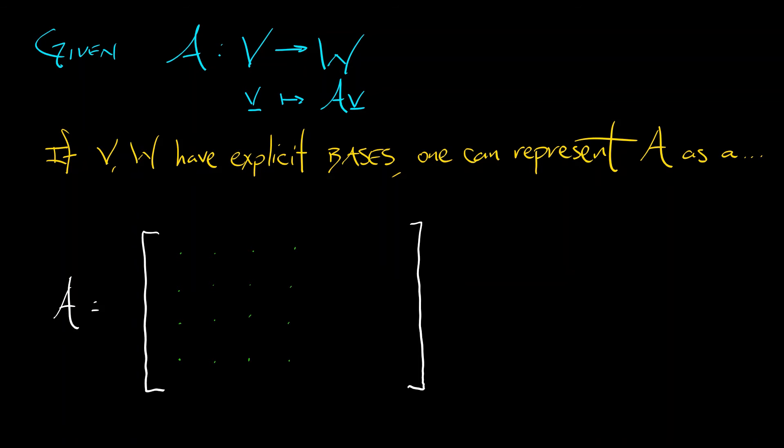That is the matrix of the linear transformation. Now, if you've seen this in calculus before, then there's often a confusion. The matrix is the linear transformation. No, no, no, no, no. It's a little more tricky than that, right? The linear transformation is what it is. The matrix is a representation of it in given coordinate bases.